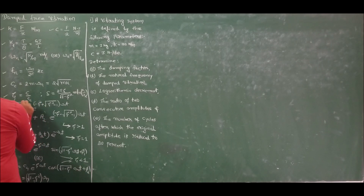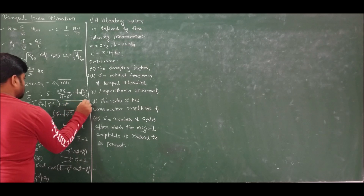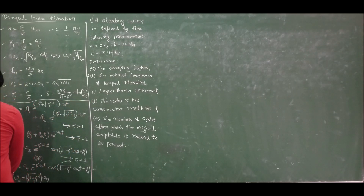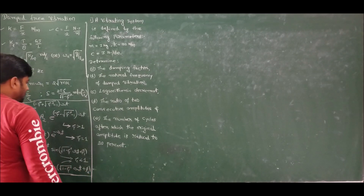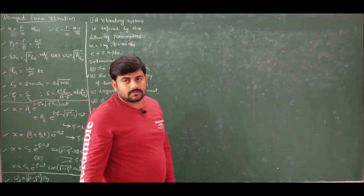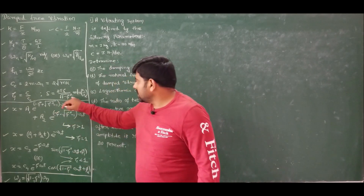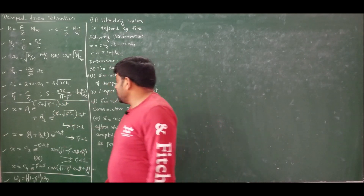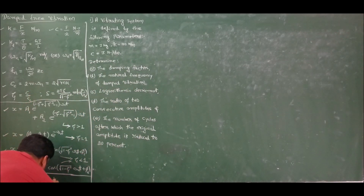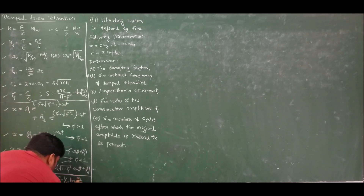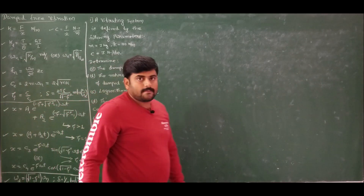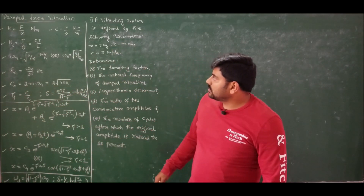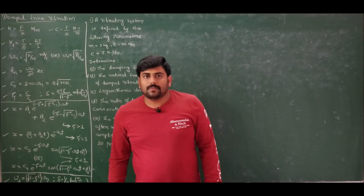For n cycles, the logarithmic decrement is also given by delta equals (1/n) * ln(x1 / x_(n+1)). These are all the formulas one should know to address problems on damped free vibration analysis.